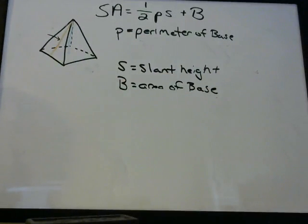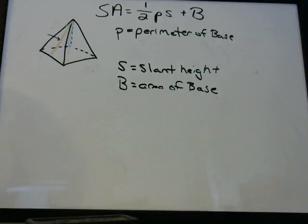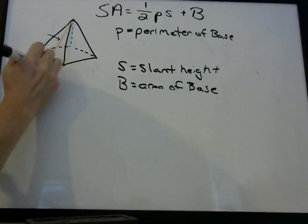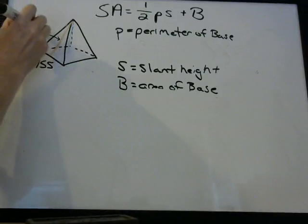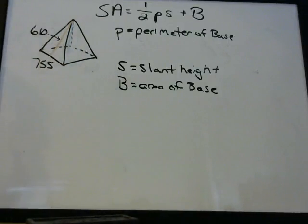Let's say we have a pyramid whose height is 480, whose length of each side is 755, and whose slant height is 610 feet.